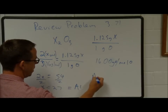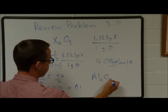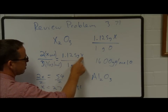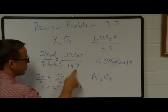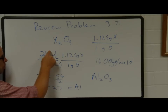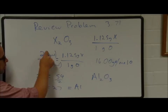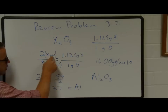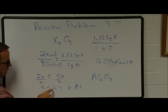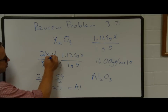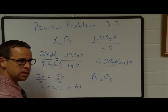To recap: we have this many grams of X for every 1 gram of oxygen. If we take the molar ratio of 2 to 3 and multiply it by the atomic mass of X and the atomic mass of oxygen, then solving for X gives us grams per mole — the molar mass of that element.